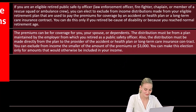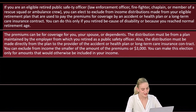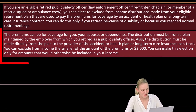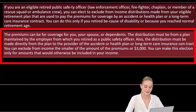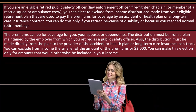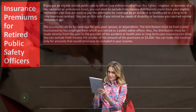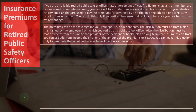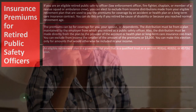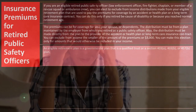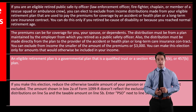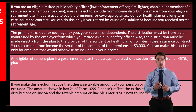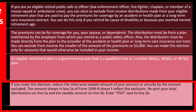The premiums can be for coverage for you, your spouse, or dependents. The distribution must be from a plan maintained by the employer from which you retired as a public safety officer, and the distributions must be made directly from the plan to the provider of the accident or health plan or long-term care insurance contract. You can exclude from income the smaller of the amount of the premiums or three thousand dollars. If you make this election, reduce the otherwise taxable amount of your pension or annuity by the amount excluded — note that box 2a of Form 1099-R does not reflect this exclusion.